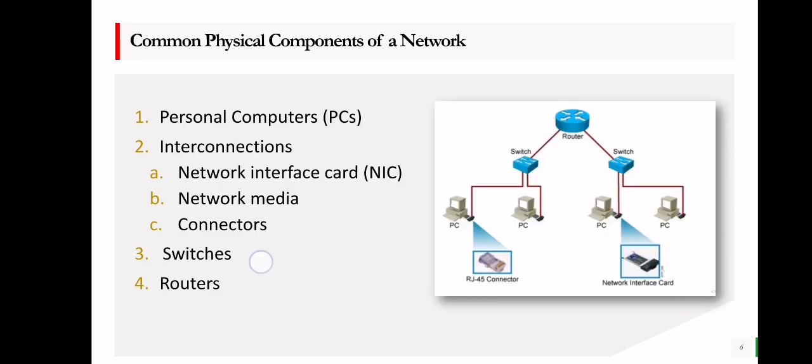Now there are common physical components of a network. These physical components can be categorized into four major types: personal computers, interconnections, switches, and routers. First is the personal computers or PCs. A computer network's endpoints are PCs. Computers in a network are in charge of sending and receiving data or information.